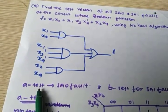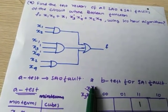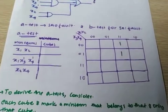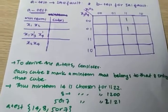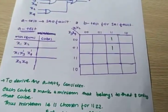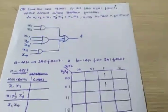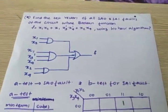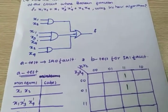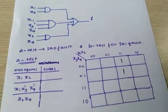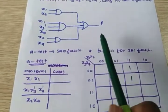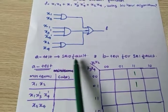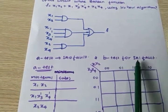The A-test is called the stuck-at-zero fault test. The A-test is normally conducted to find the circuit's stuck-at-zero fault. The B-test is normally done for the circuit's stuck-at-one fault. So: A-test is for circuit stuck-at-zero fault, and B-test is for circuit stuck-at-one fault.